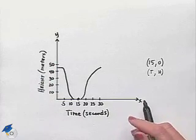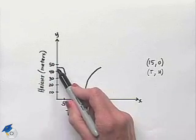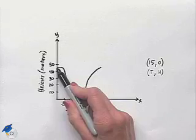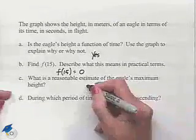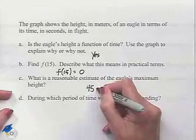So we're going to estimate that the eagle's height would be 45 at this point. And that looks like our maximum value. So a reasonable estimate would be 45, and remember this is in meters.